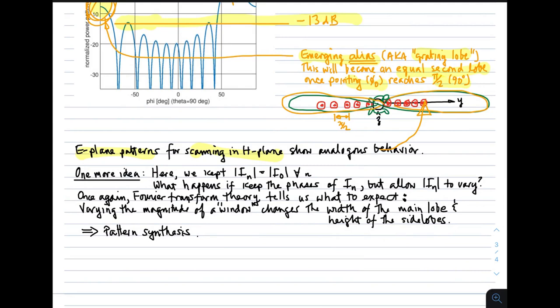So to wrap up this lecture, just one more idea. And that's that here we did phase-only beamforming. So what happens if we keep the phases of I_n that we have experimented with above, but allow the magnitudes to vary across the aperture? So again, Fourier transform theory tells us what to expect. Varying the magnitude of a window changes the width of the main lobe and the height of the side lobes. So this is one, not the only, but one technique for doing pattern synthesis. If we want to change the width of the lobe, if we want to change the side lobes, then we would vary the magnitudes. And that leads to one technique for pattern synthesis.